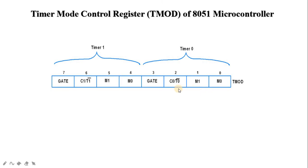Bit 2 and bit 6 are the C/T (counter or timer) bits. Bit 2 indicates whether Timer 0 operates as a counter or timer. This bit is set by program to make the timer act as a counter by counting pulses from external input pins (pin 3.5 for Timer 1 or pin 3.4 for Timer 0). It is cleared to 0 to make the timer act as a timer by counting internal frequency.